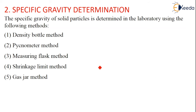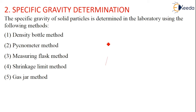Coming to the next determination, that is specific gravity determination. Specific gravity of solid particles is determined by various laboratory experiments. The methods are: density bottle method, pycnometer method, measuring flask method, shrinkage limit method, and gas jar method.